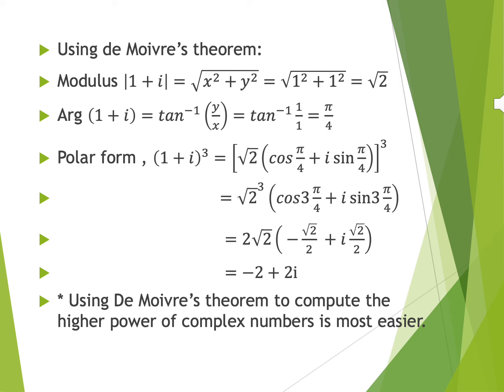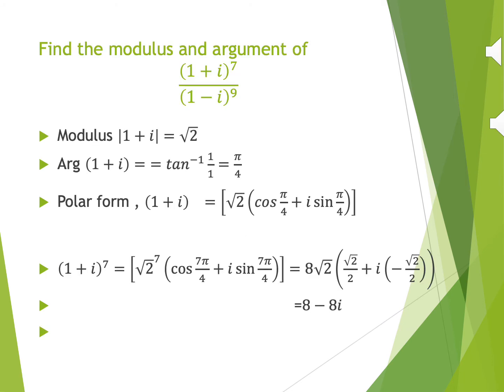Using De Moivre's theorem to compute the higher power of a complex number is much easier compared to using binomial expansion. For example 1: find the modulus and argument of the complex number (1 + i)⁷ divided by (1 − i)⁹.